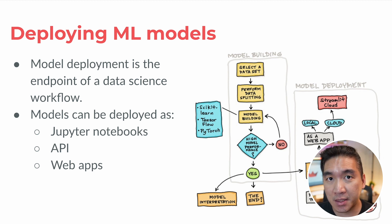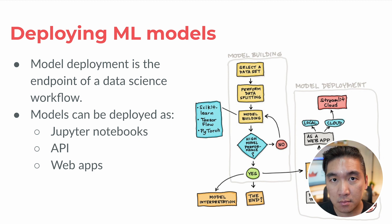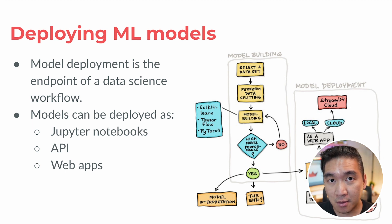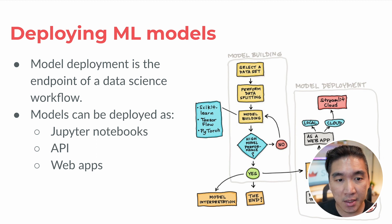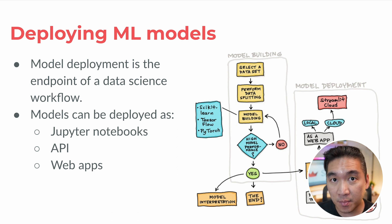Model deployment is the endpoint of a data science workflow. When machine learning models are built, deployed models will allow end users — which could be stakeholders making use of your machine learning pipeline — to interact with your models, kind of like machine learning as a service. Typically, models could be deployed as a Jupyter notebook, as an API, or as a web application.